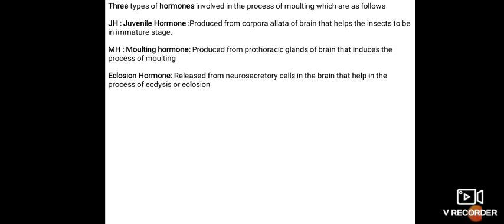MH, Moulting Hormone, produced from prothoracic gland of the brain that induces the process of molting. Eclosion Hormone, released from neurosecretory cells in the brain that helps in the process of ecdysis or eclosion.